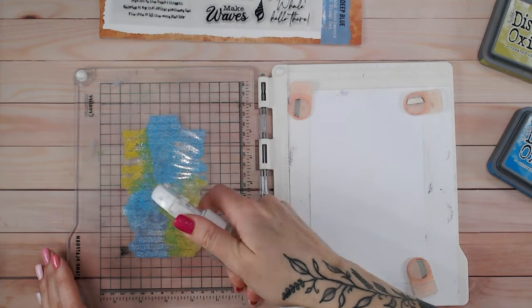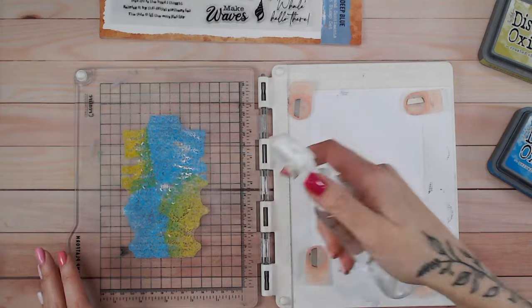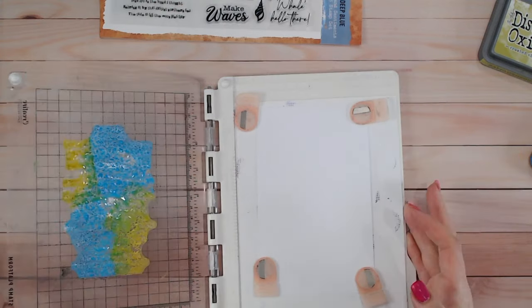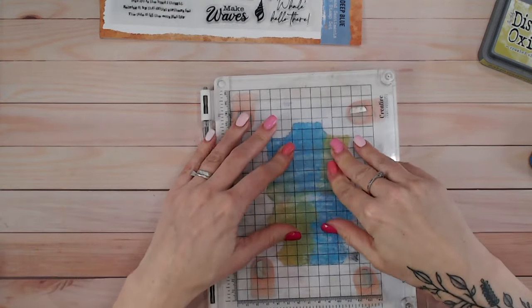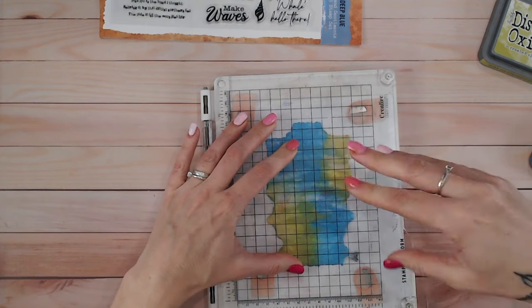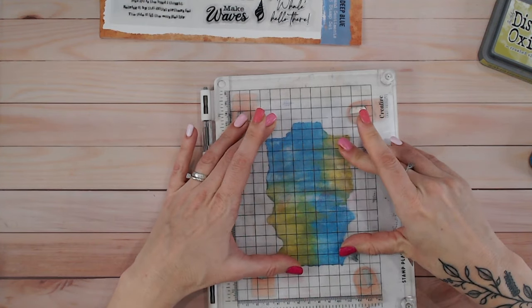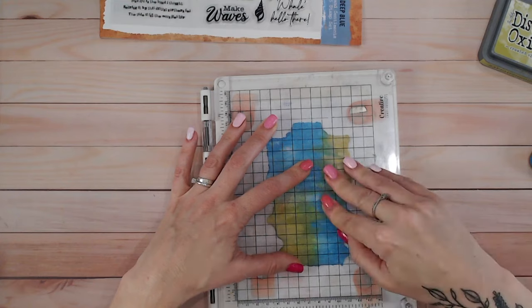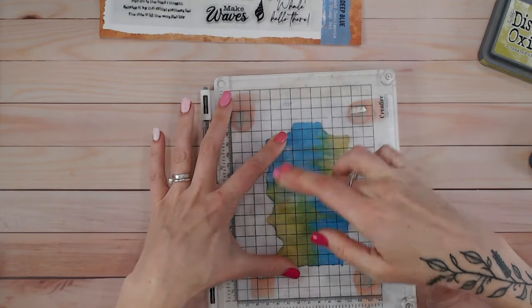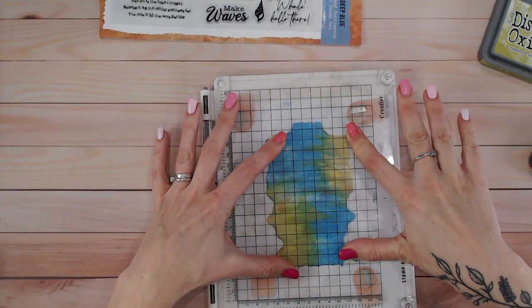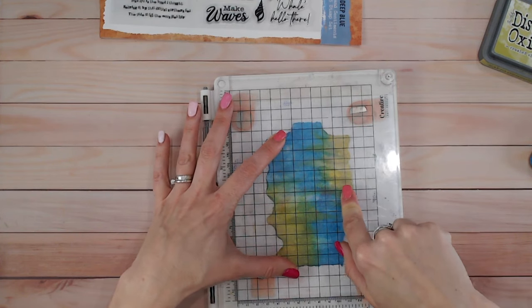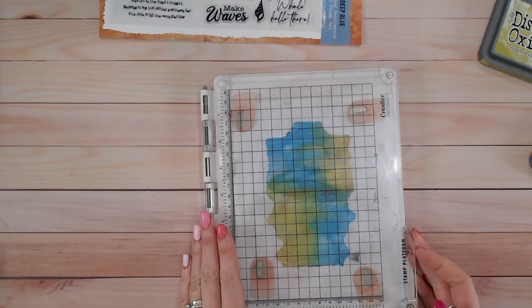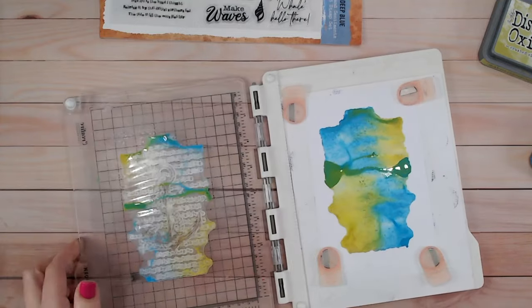I'm going to spritz some water over these two and then I'm going to place this onto my paper. As I press that down, all that lovely ink is going to soak into the paper. I'm holding it down for just a moment or two, but as you can see the boundary of that ink isn't really moving beyond where the stamp is. Just let that lift up carefully. There we go.